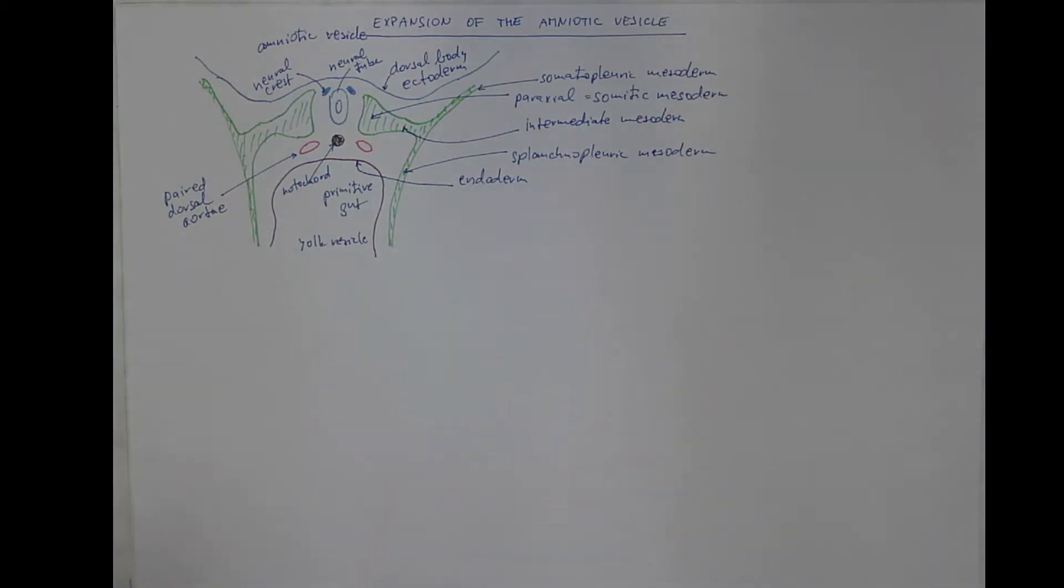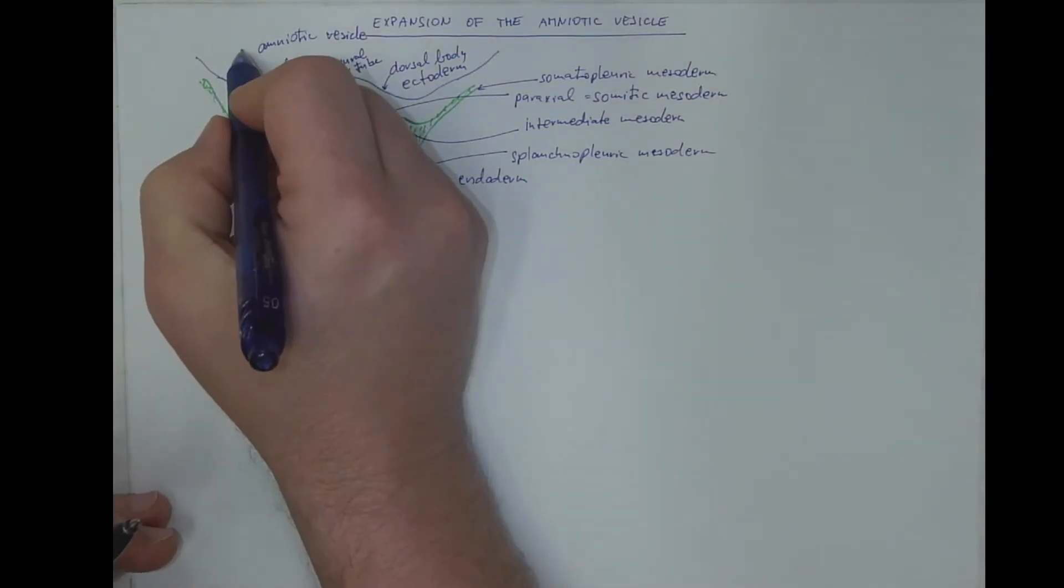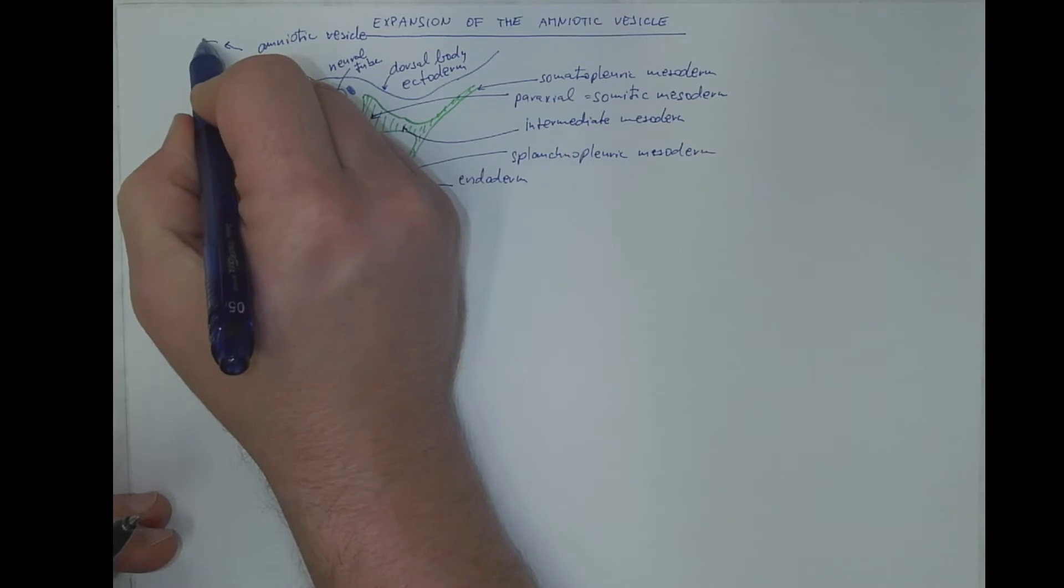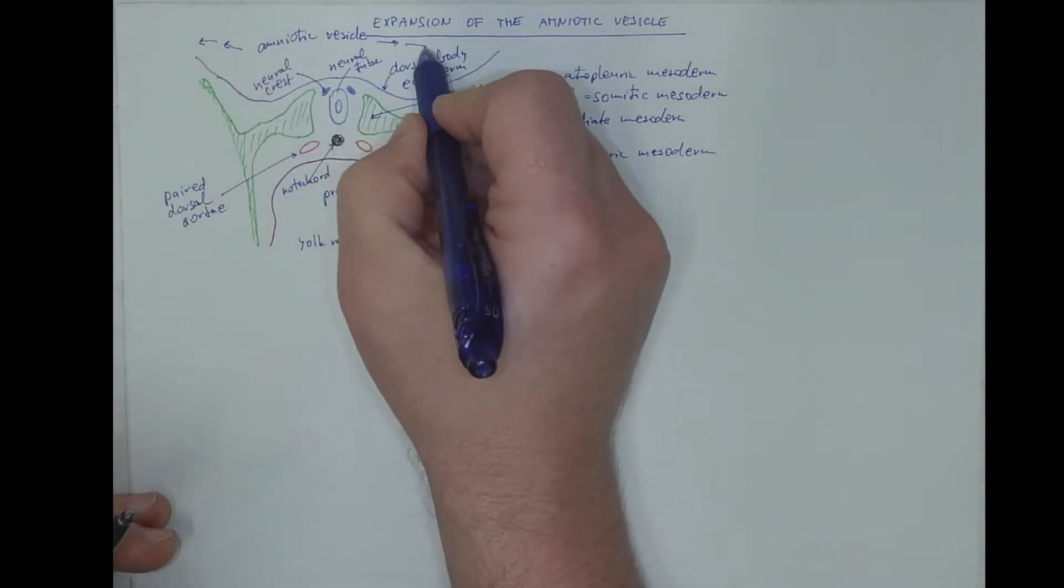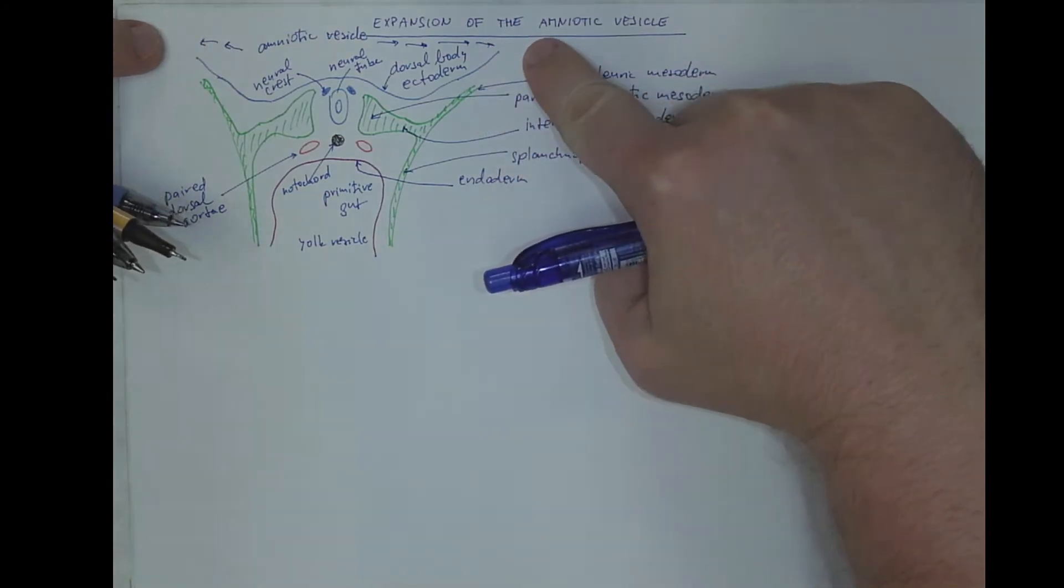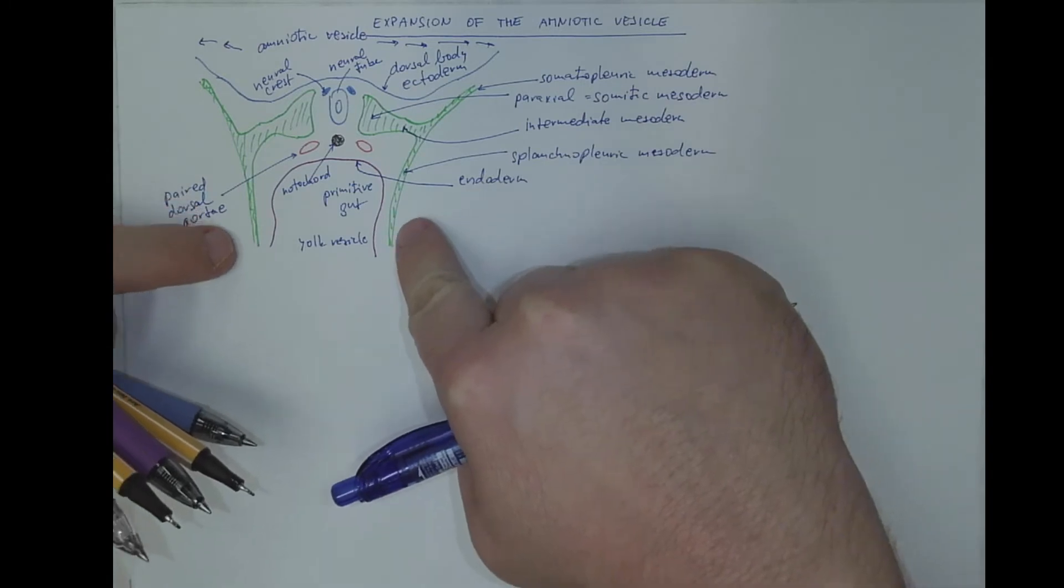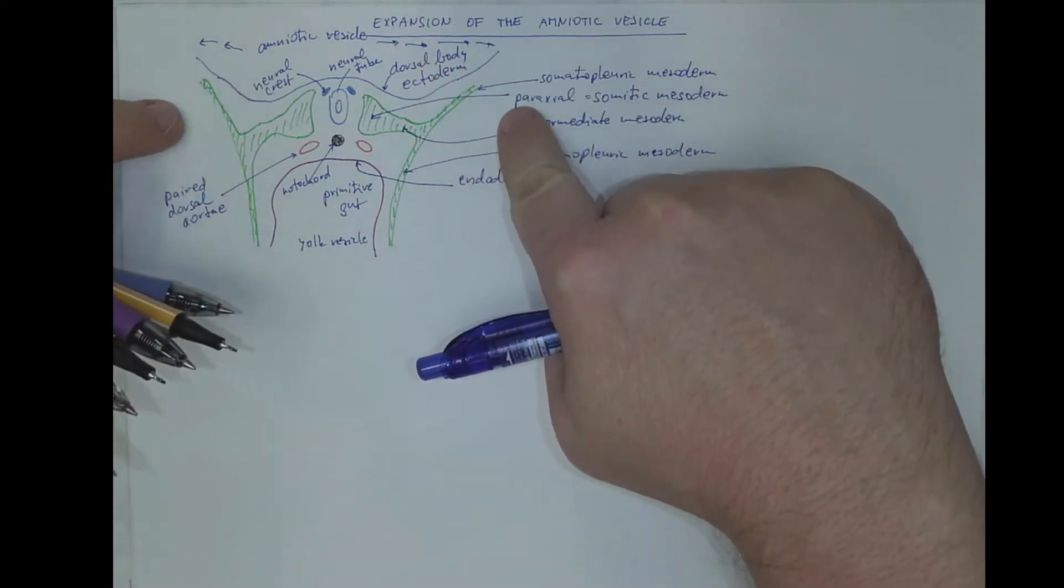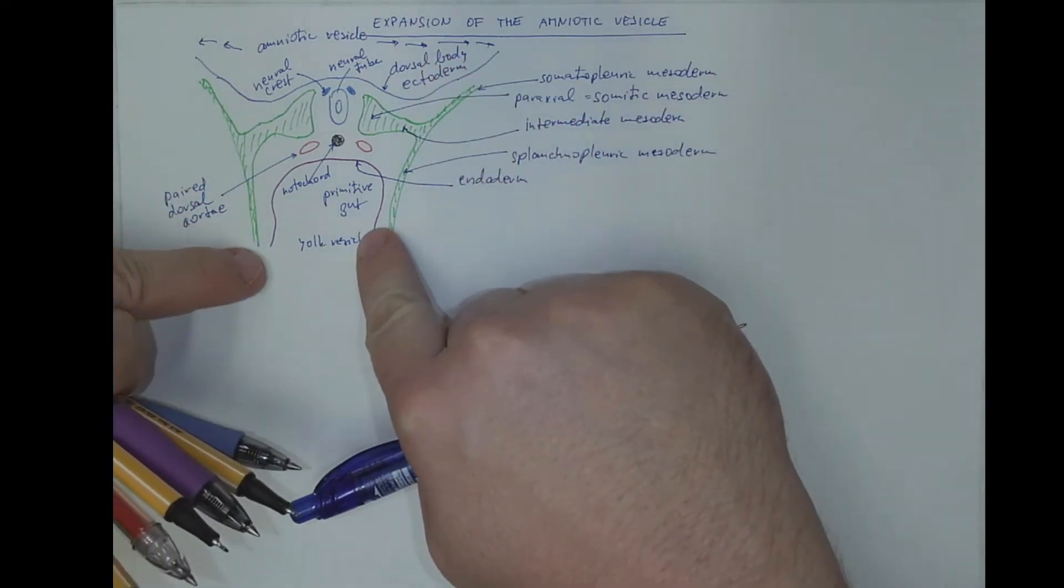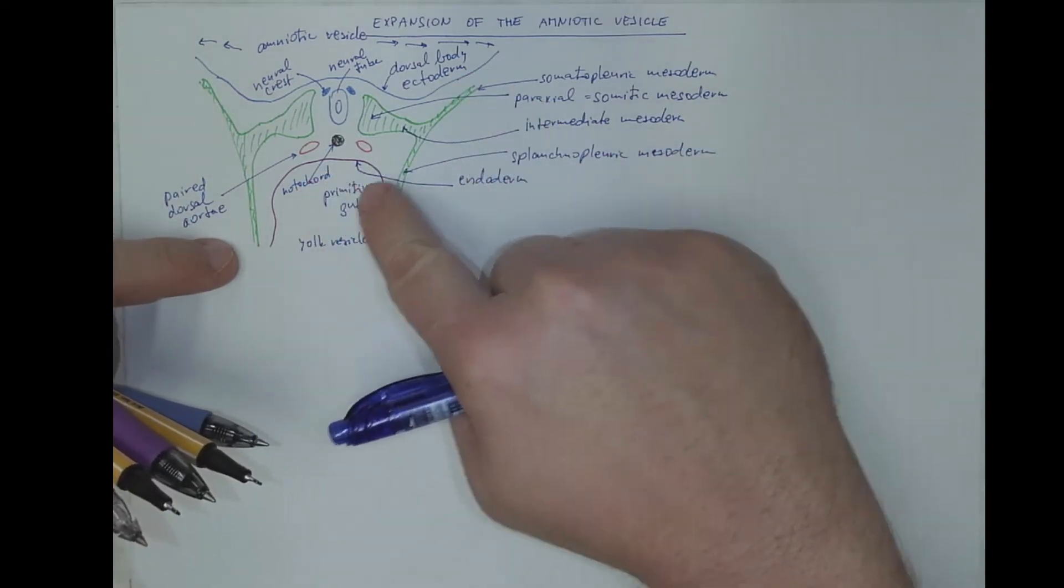Now what happens here is expansion of the amniotic vesicle. And by expanding in this direction, it will close, it will encircle the yolk vesicle, trap its roof inside.